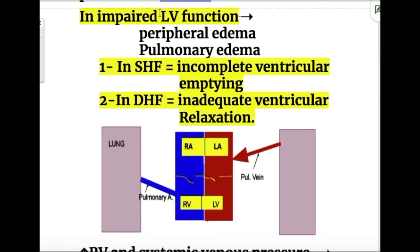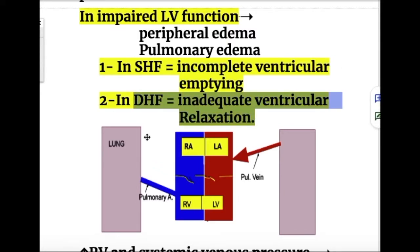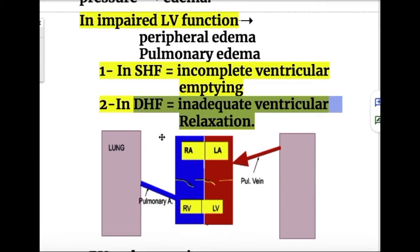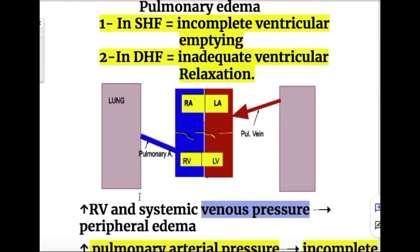In impaired left ventricular function, peripheral or pulmonary edema may occur. In systolic heart failure there is incomplete ventricular emptying; in diastolic heart failure there is inadequate ventricular relaxation. Both cause pressure overload on the right ventricle. Blood flows from right atrium to right ventricle, through pulmonary artery to lungs, back through pulmonary vein to left atrium and left ventricle. Pressure overload backs up to the right ventricle and systemic venous pressure, leading to peripheral edema.